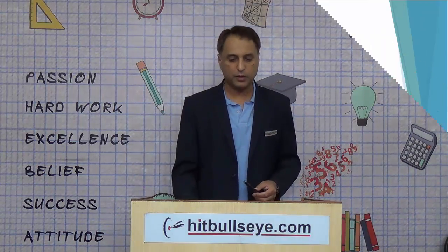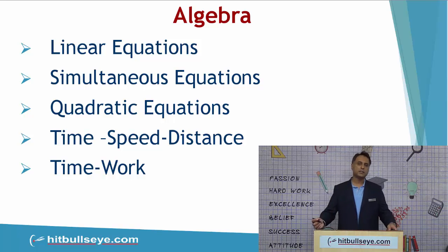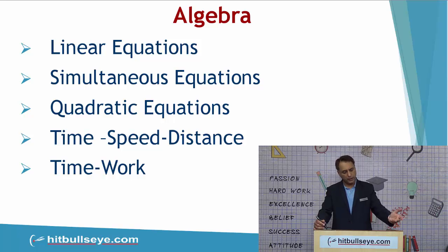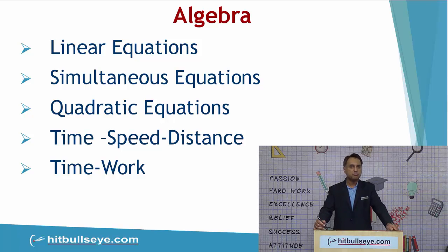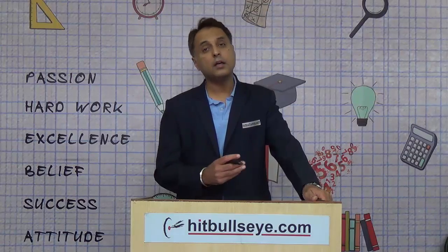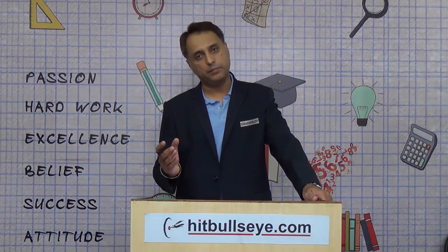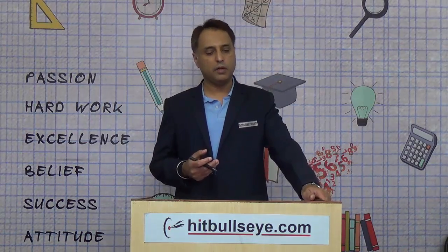Let's look at the next module — algebra. Algebra has a huge representation of equations: linear, simultaneous, and quadratic. Then of course we have time-speed-distance and time and work. These are the popular areas in algebra which have been there in the CAT. At an overt level you might feel this is only a test of equations, but at the covert level there is another challenge which we need to understand.